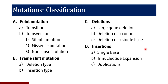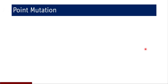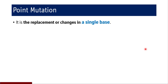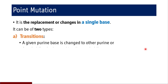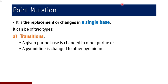A point mutation is the replacement or change in a single base. It can be of two types: transition or transversion. In a transition, a given purine base is changed to another purine only, or a pyrimidine is changed to another pyrimidine. So adenine changes to guanine, guanine changes to adenine, cytosine changes to thymine, and thymine changes to cytosine — these are transitions: purine to purine and pyrimidine to pyrimidine.